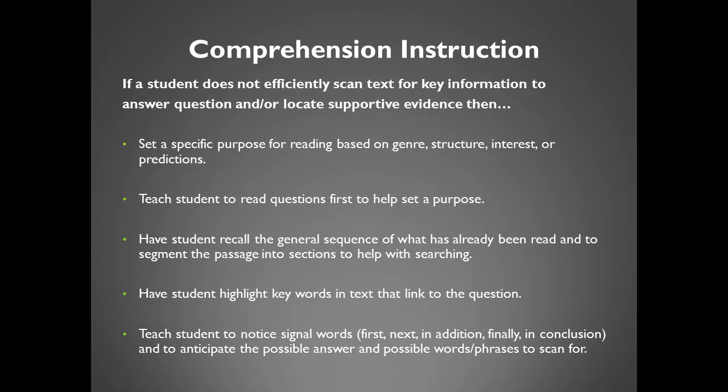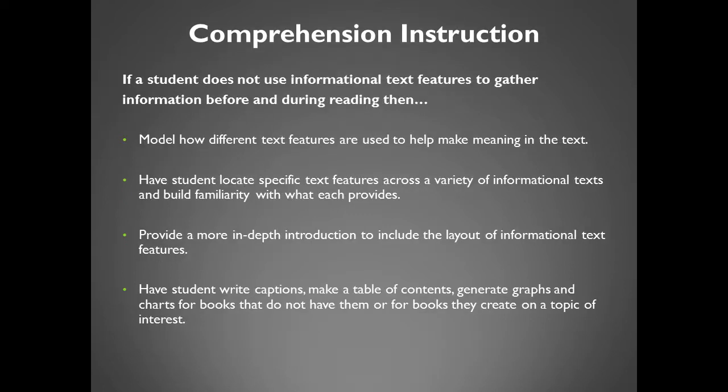If a student does not use informational text features to gather information before and during reading, then model how different text features are used to help make meaning in the text. Have the student locate specific text features across a variety of informational texts and build familiarity with what each provides. Provide a more in-depth introduction to include the layout of informational text features. Have the student write captions, make a table of contents, and generate graphs and charts for books that do not have them or for books they create on a topic of interest.